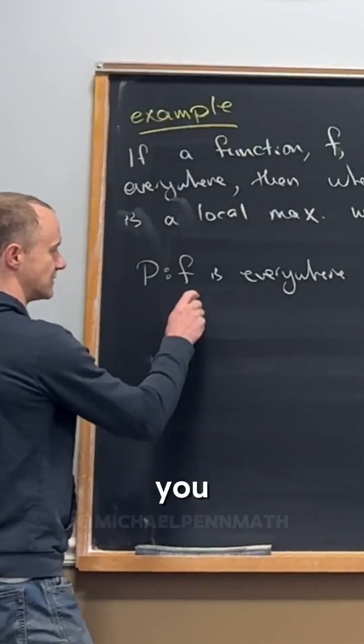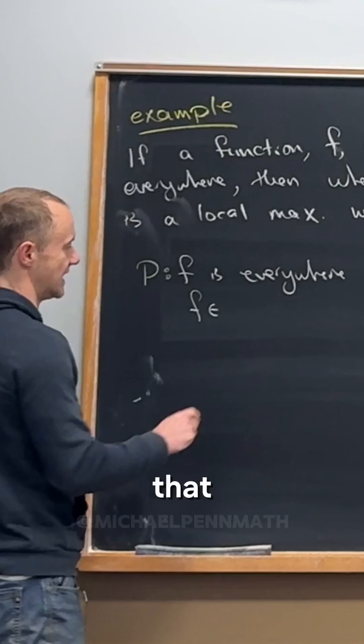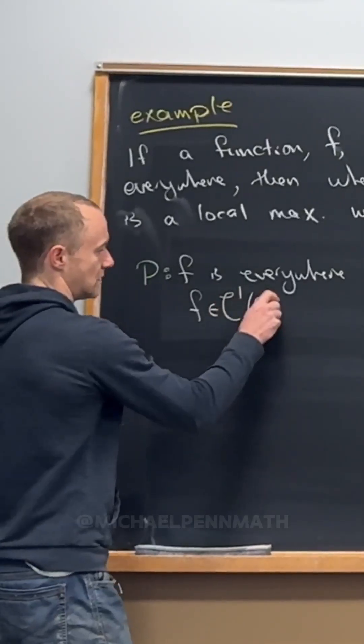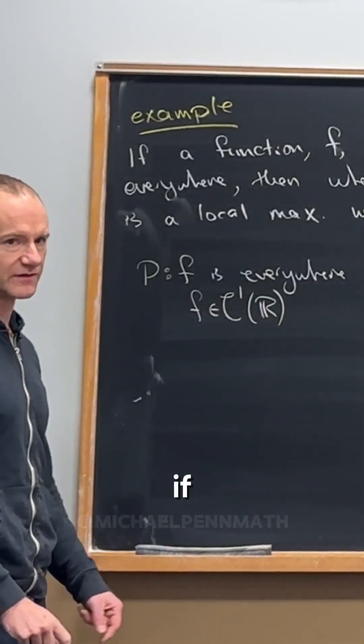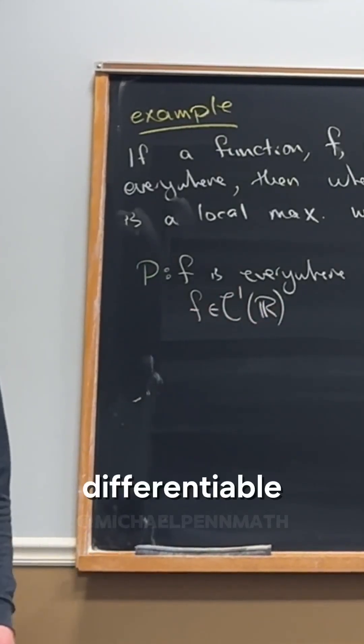differentiable. For those of you interested in notation, that is C1. The number up here whenever you have something like this is the number of times it's differentiable.